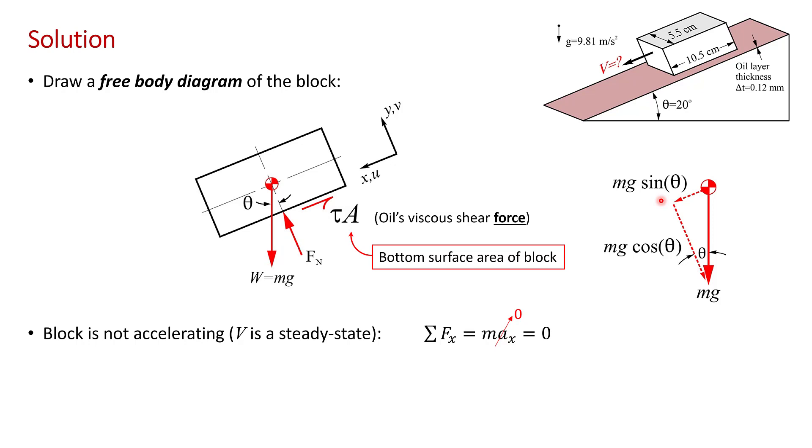As I said, it's the component of the weight parallel to the plane, Mg sin theta, that's causing the block to slide, and the shear force tau A that's opposing motion. So our sum of the forces equals zero, and the X direction is just Mg sin theta, and then minus tau A equals zero. We just get that the X component of the weight balances the shear force on the block.